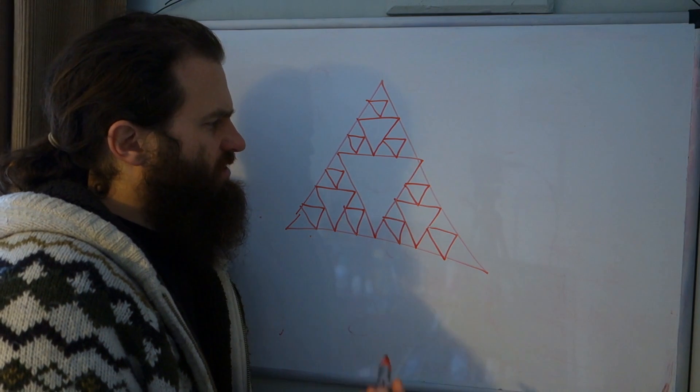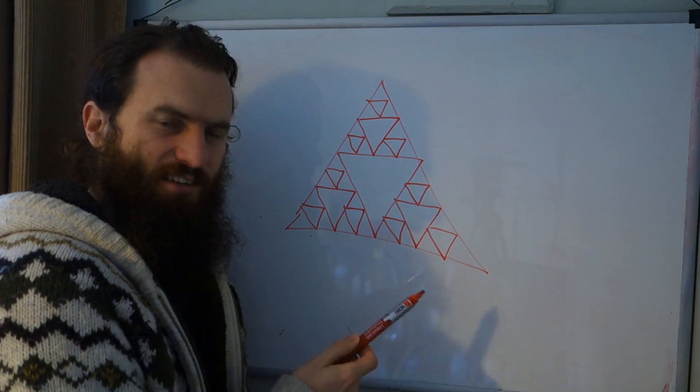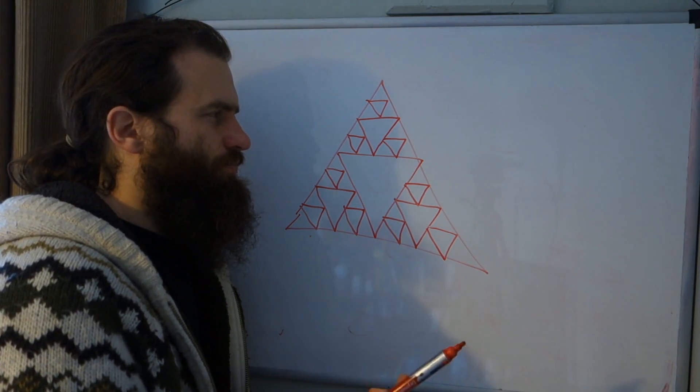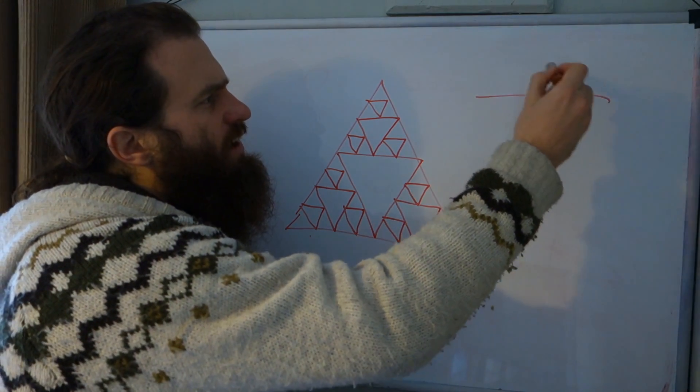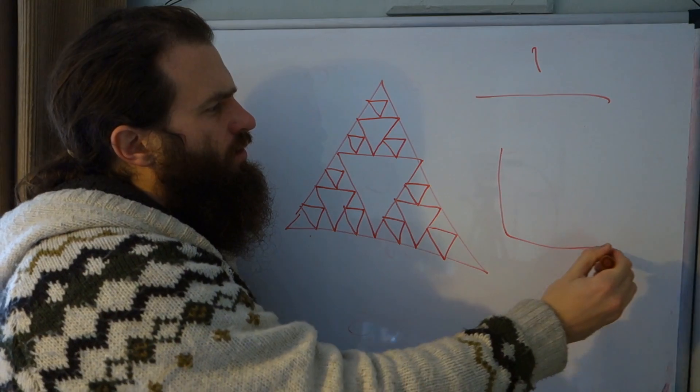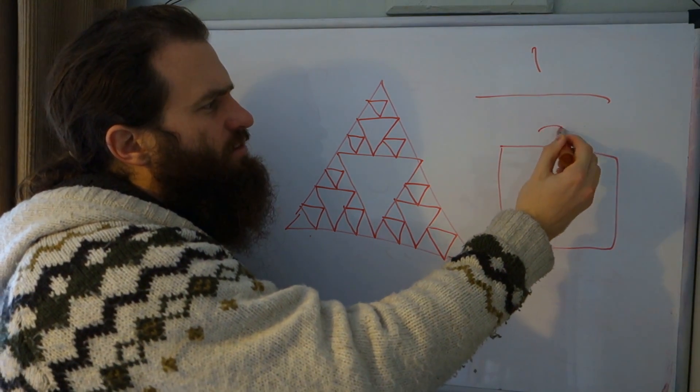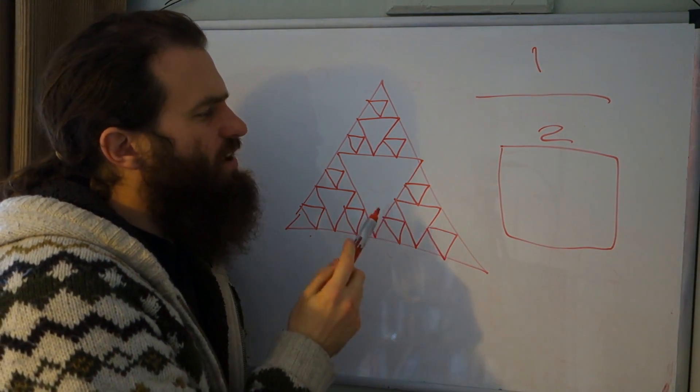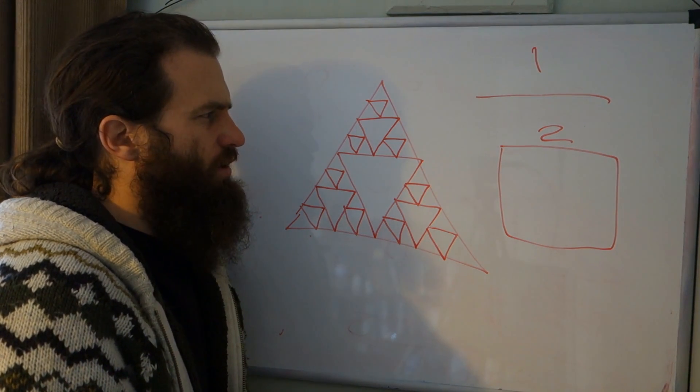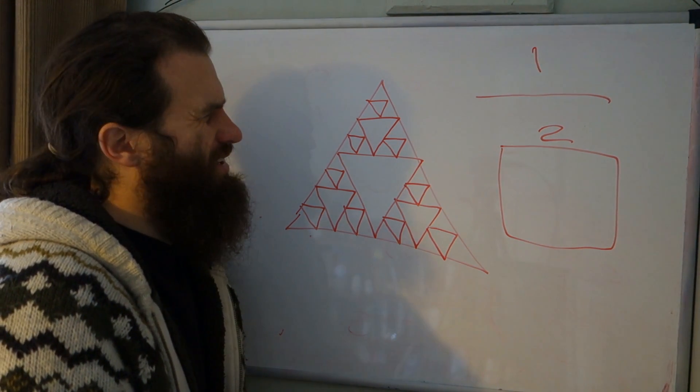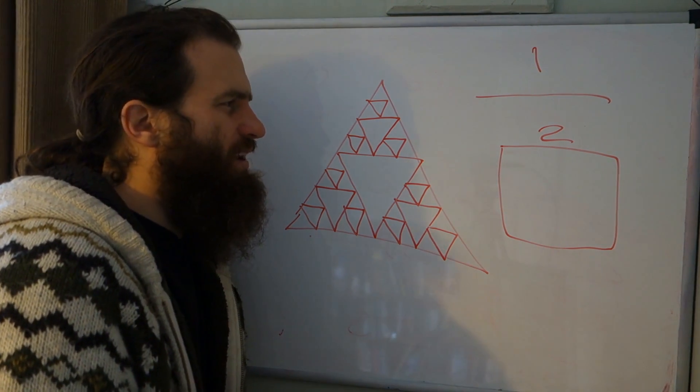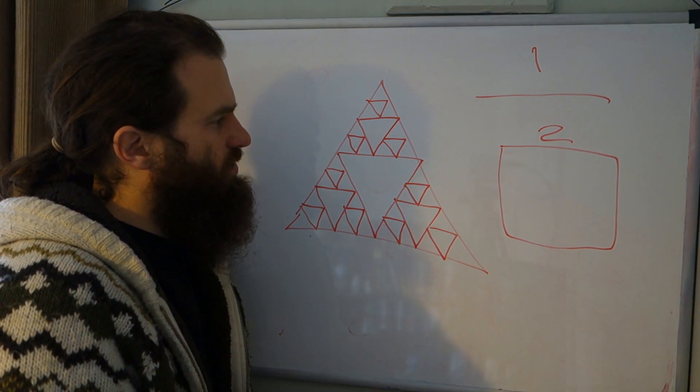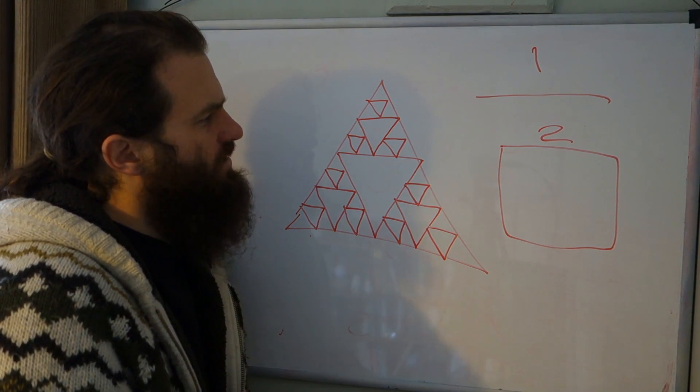Now what I want to ask is, what is the dimensionality of this abstract mathematical object? So if we said that a line has dimension one, and a plane has dimension two, what dimension does this have? Now we might say, well it has dimension two, it's on a plane, but that's not really very useful. So what Mandelbrot kind of came up with was this idea of fractal dimension.